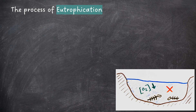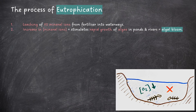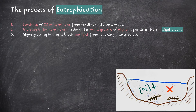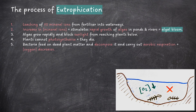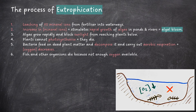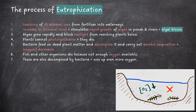In eutrophication, we first have the leaching of excess mineral ions from fertiliser into waterways. This results in an increase in the concentration of mineral ions, stimulating the rapid growth of algae in ponds and rivers — something called algal bloom. The algae grow rapidly, blocking sunlight from reaching plants below. The plants cannot photosynthesise, meaning they die. Bacteria feed on the dead plant matter and decompose it whilst carrying out aerobic respiration, using up oxygen, so the concentration of oxygen in the water decreases. Fish and other organisms die because not enough oxygen is available. These organisms are then also decomposed by bacteria, which uses up even more oxygen, creating a vicious oxygen-depleting cycle resulting in the death of the ecosystem.